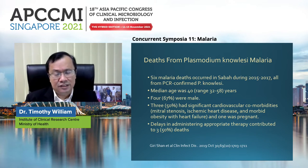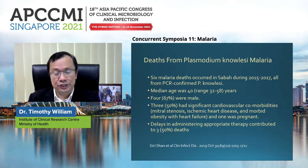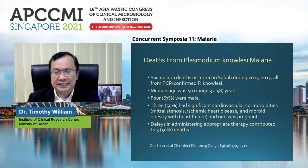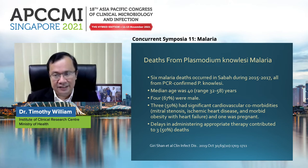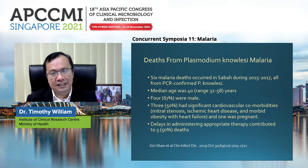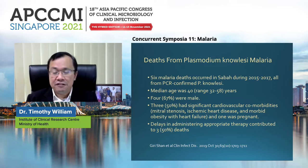Plasmodium knowlesi can cause severe disease. Formerly, in the early 2000s, we used to think only P. falciparum causes severe malaria. However, it is now known that non-falciparum Plasmodium, including P. knowlesi, can also cause severe malaria. Six malaria deaths occurred in Sabah from 2015 to 2017, all PCR-confirmed P. knowlesi. The median age was 40 years old with a range of 32 to 58. Four (67%) were male. Three (50%) had significant cardiovascular comorbidities such as mitral stenosis, ischemic heart disease, and morbid obesity with heart failure. One patient was pregnant. Delays in receiving appropriate therapy contributed to about 50% of the deaths.